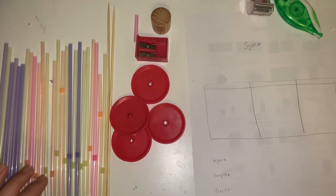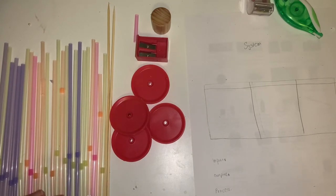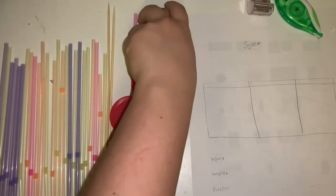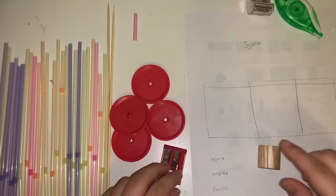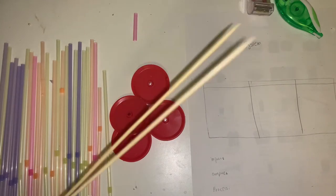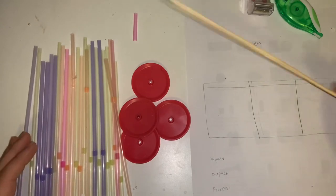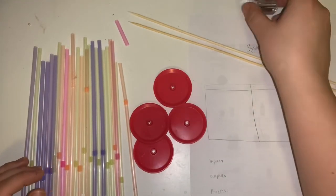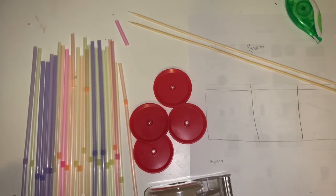Today's prototype is to make a transportation vehicle to transport objects. Our prototype is going to transfer smaller objects. You are given two dowels, ten straws, four reels, and tape.